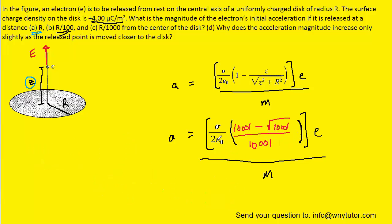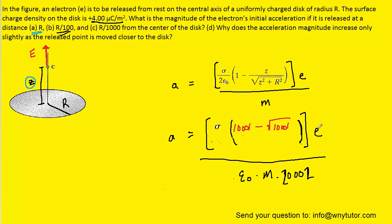Pushing 2 epsilon-naught and 10,001 down to the denominator gives 2 epsilon-naught times mass times 10,001. Since 2 times 10,001 is 20,002, we update that term. Plugging in the same known values for sigma, e, epsilon, and mass, we get about 3.94 times 10 to the 16 meters per second squared — the correct answer to part B.